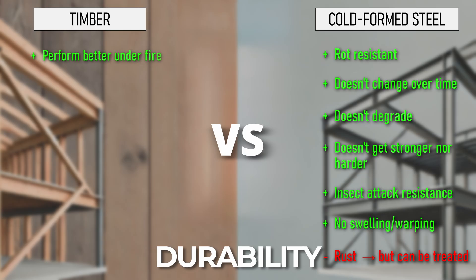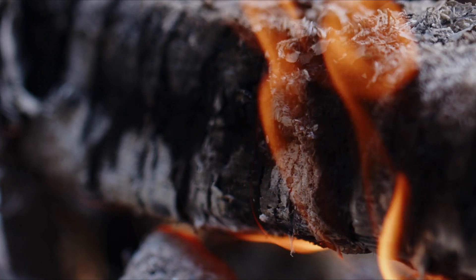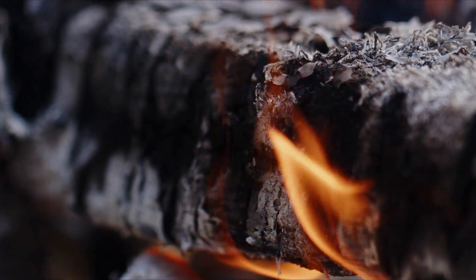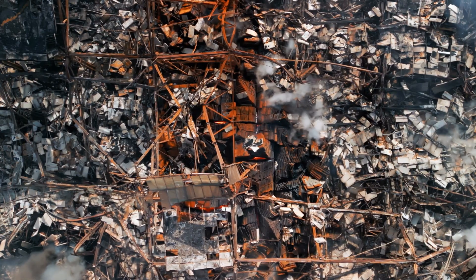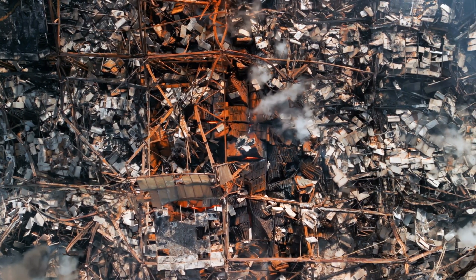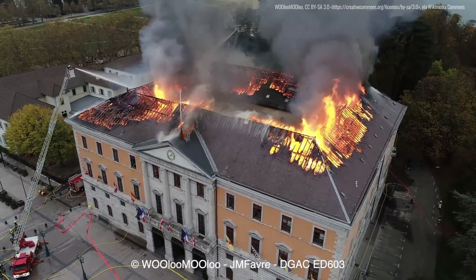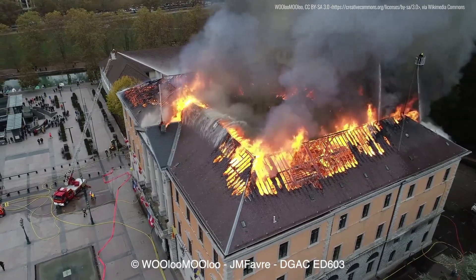This is where timber can sometimes be better — under fire. When talking about durability and fire, it may be a little contradictory, but timber, because it can burn itself out — although it is flammable — can potentially perform a little bit better under fire. Cold-formed steel, when it gets heated up, reduces in strength and can potentially be damaged. The benefit of cold-formed steel in a fire situation is that it doesn't actually add to the fire load. But most of the time timber performs a little bit better, because it gets charring on the outside while the main structure can remain standing.